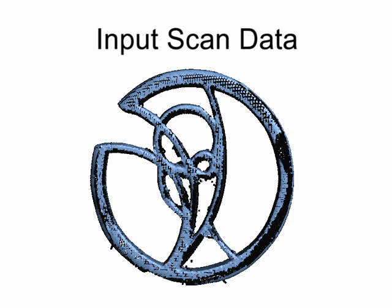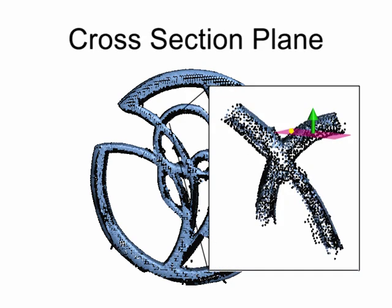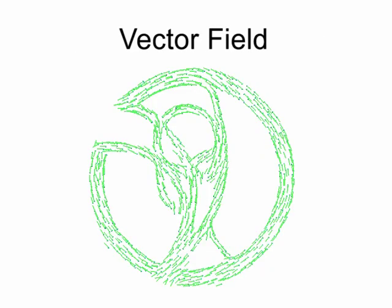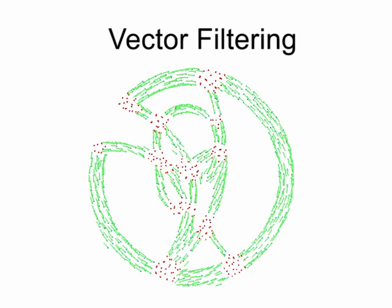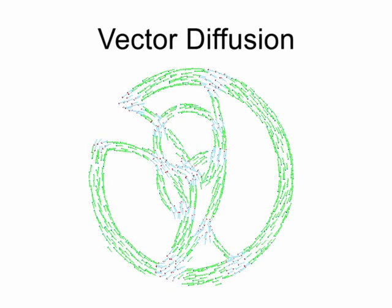Given an input scanned data, we compute a cross-section plane for each sample point by starting from an initial cutting plane and iteratively re-estimating the plane using a local optimization. The normal of the plane is assigned as the point's directional vector. Points are then filtered out from unreliable regions identified based on local consistency among directional vectors. We solve a global Laplacian equation using a sparse linear system to propagate the directional vectors from the reliable regions to the unreliable ones.